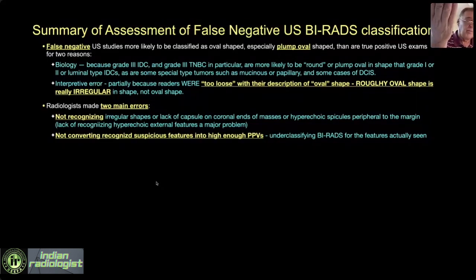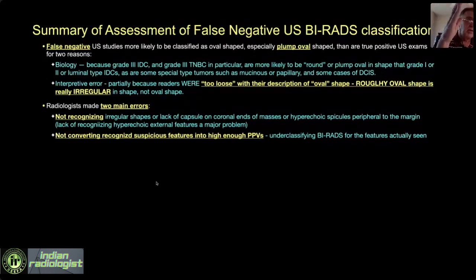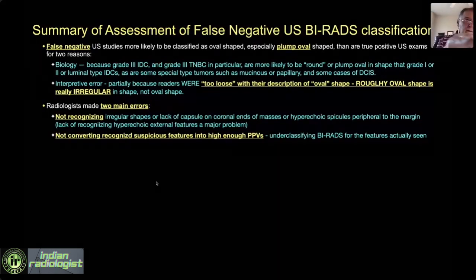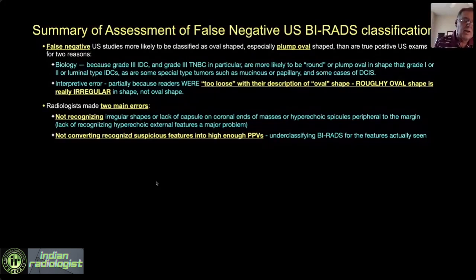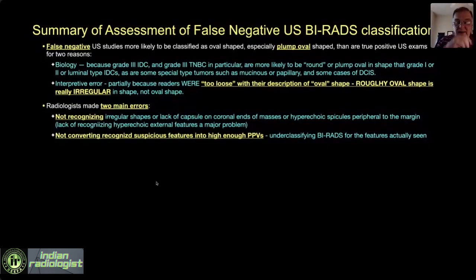The front of the lesion doesn't show invasion because you'd have to grow through tissue planes to make the front irregular — same for the back. Irregularity occurs where there's low resistance to invasion: between tissue planes, which on a breast mass means on the sides of the lesion. Still images don't give us an adequate view of the sides; video sweeps give us a much better appreciation.